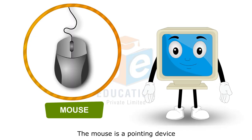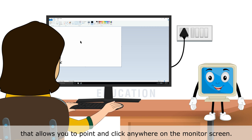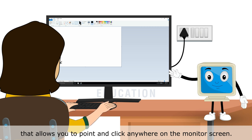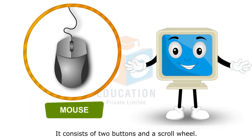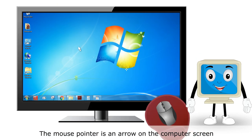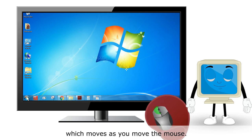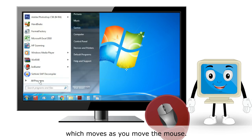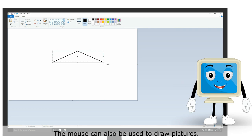The mouse is a pointing device that allows you to point and click anywhere on the monitor screen. It consists of two buttons and a scroll wheel. The mouse pointer is an arrow on the computer screen which moves as you move the mouse. The mouse can also be used to draw pictures.